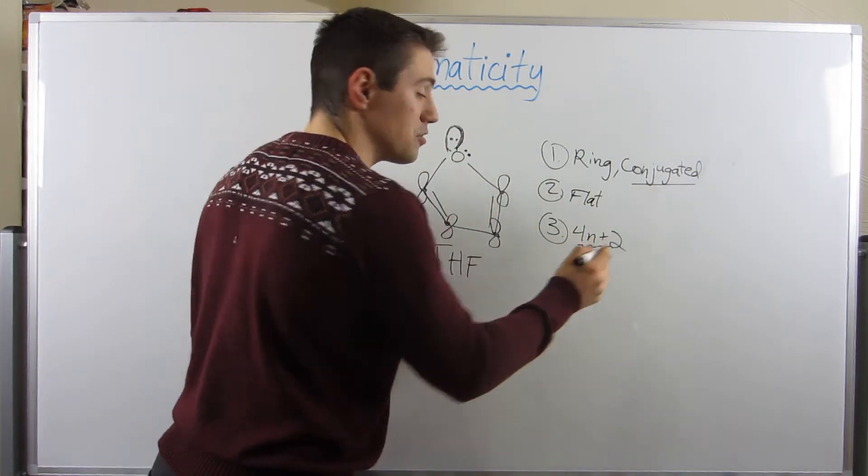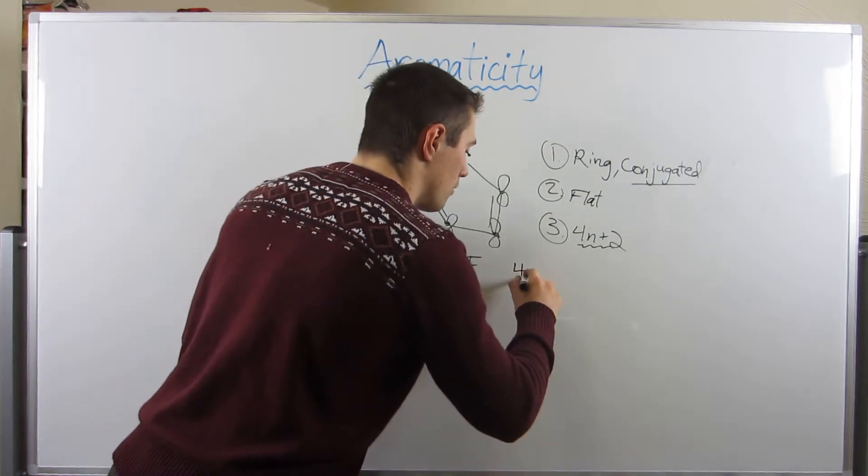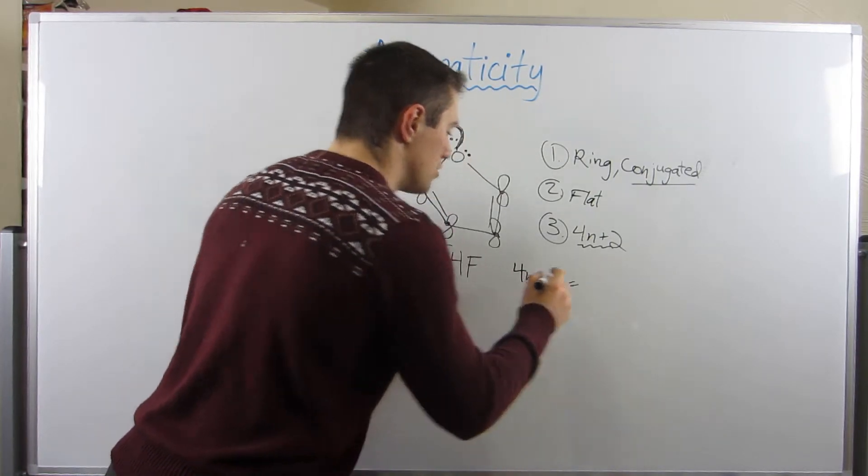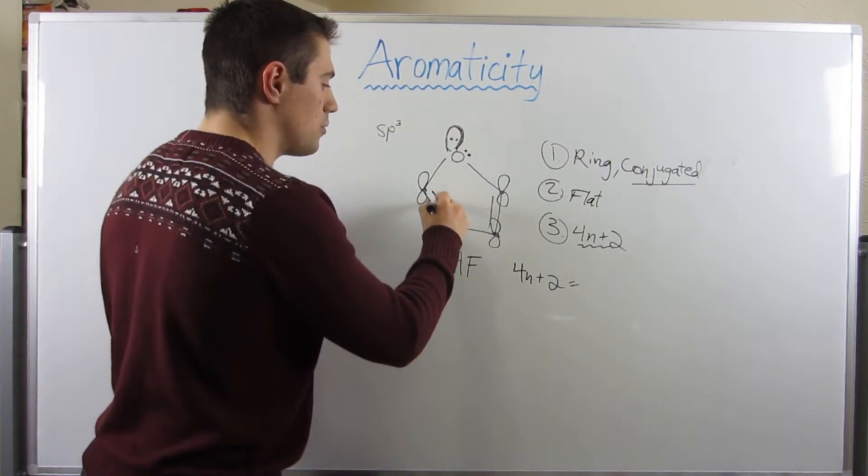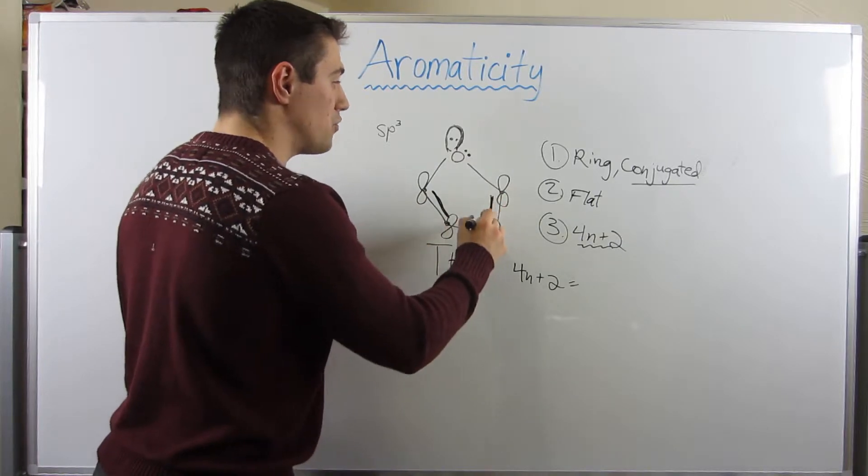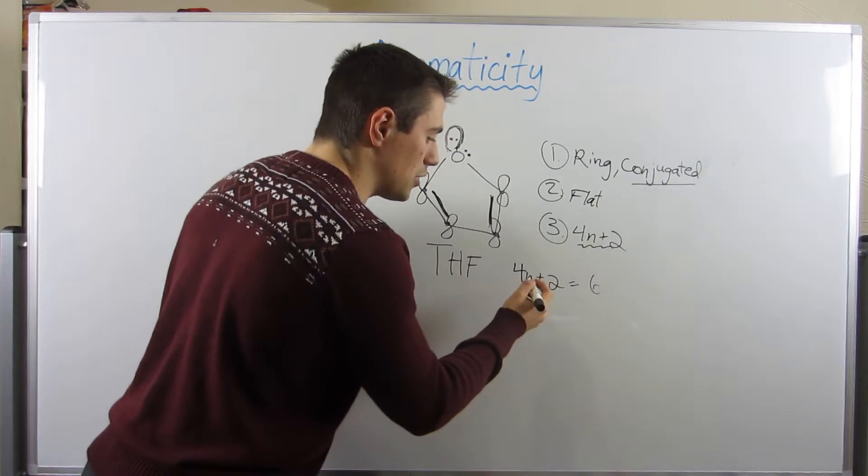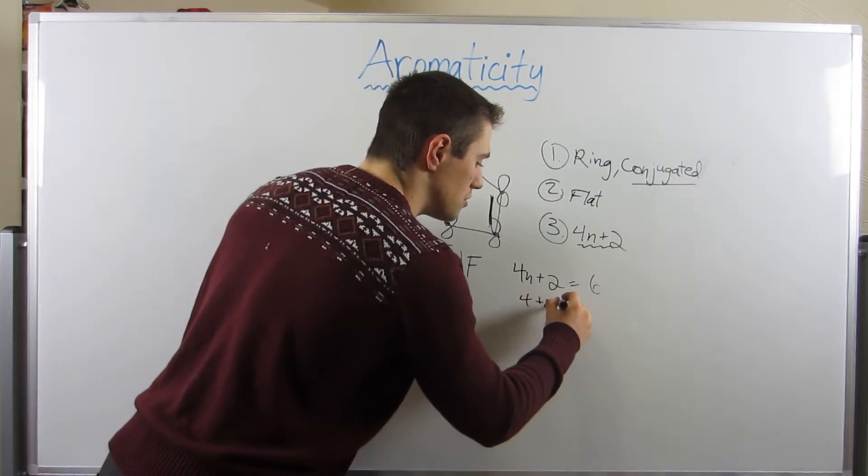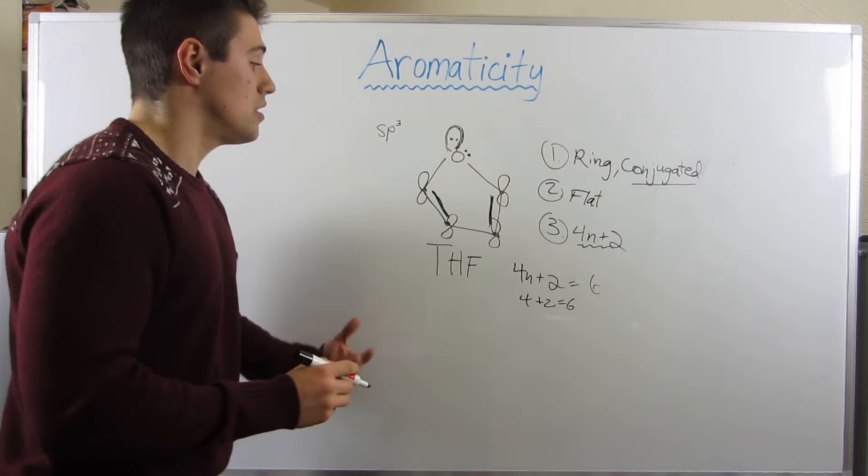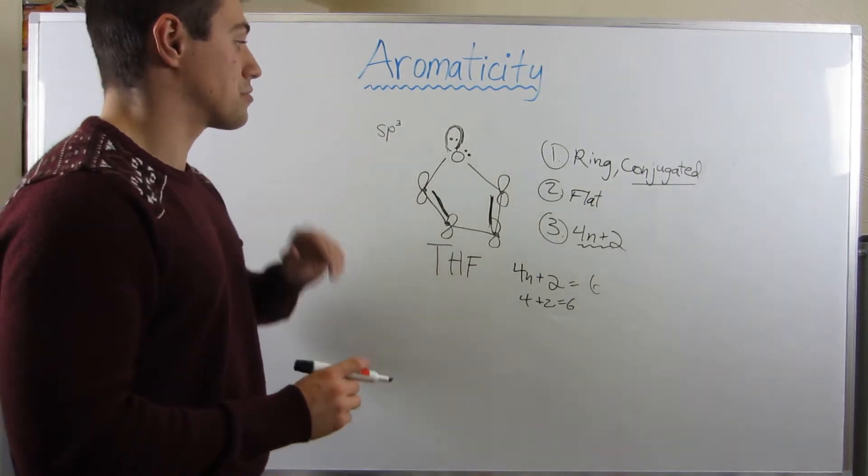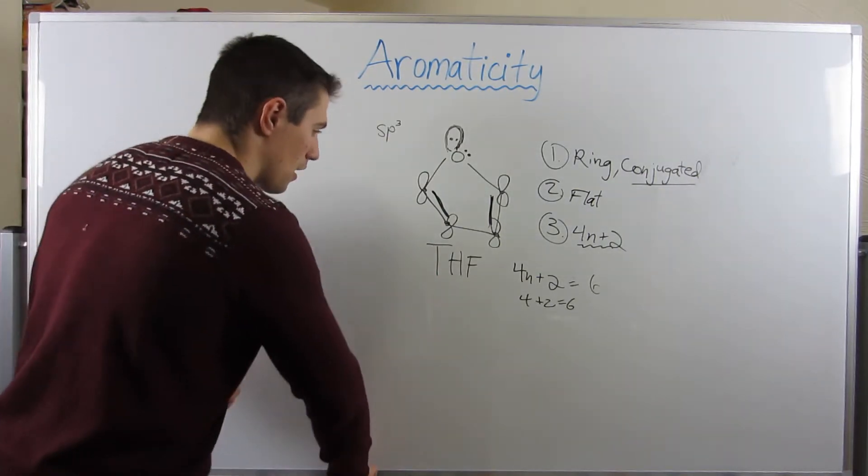So now we know we're conjugated because oxygen will force his electrons to be parallel to the other p-orbitals. Let's see if the 4n plus 2 rule checks out. So we have two electrons from this double bond, two electrons from here. That's four, and then we have two from this oxygen. So again, we saw this earlier. If we make n equal to one, four plus two does, in fact, equal six. So THF is absolutely aromatic.